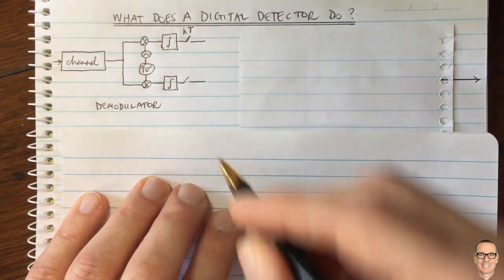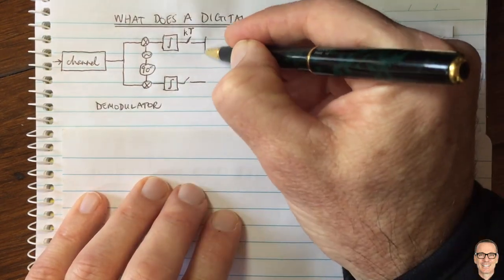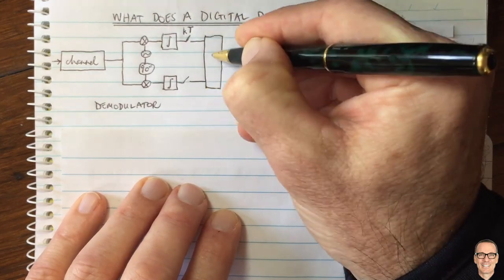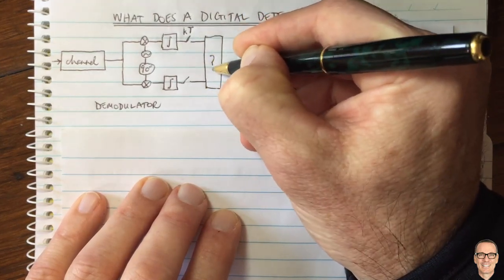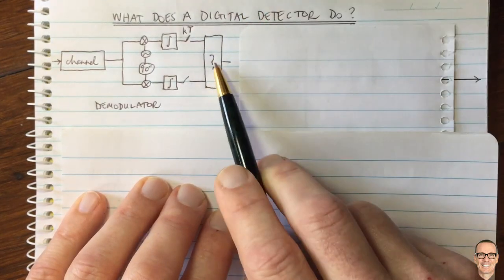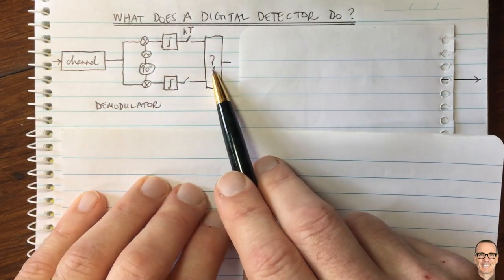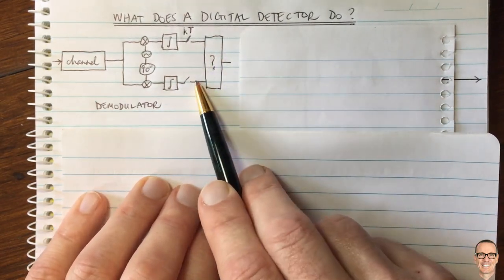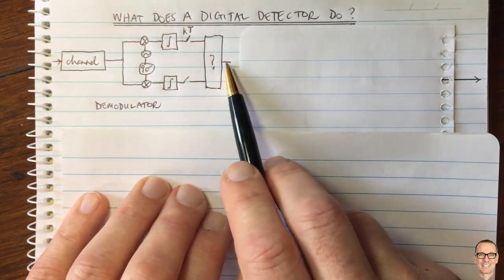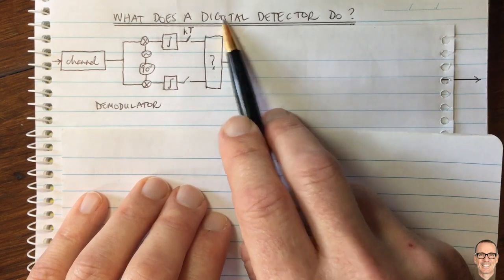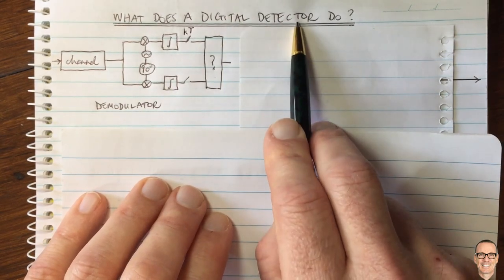The digital detector is the next box. What we do in the digital detector is take these samples and make decisions about which digital symbol was sent. That is the digital detector and its job.